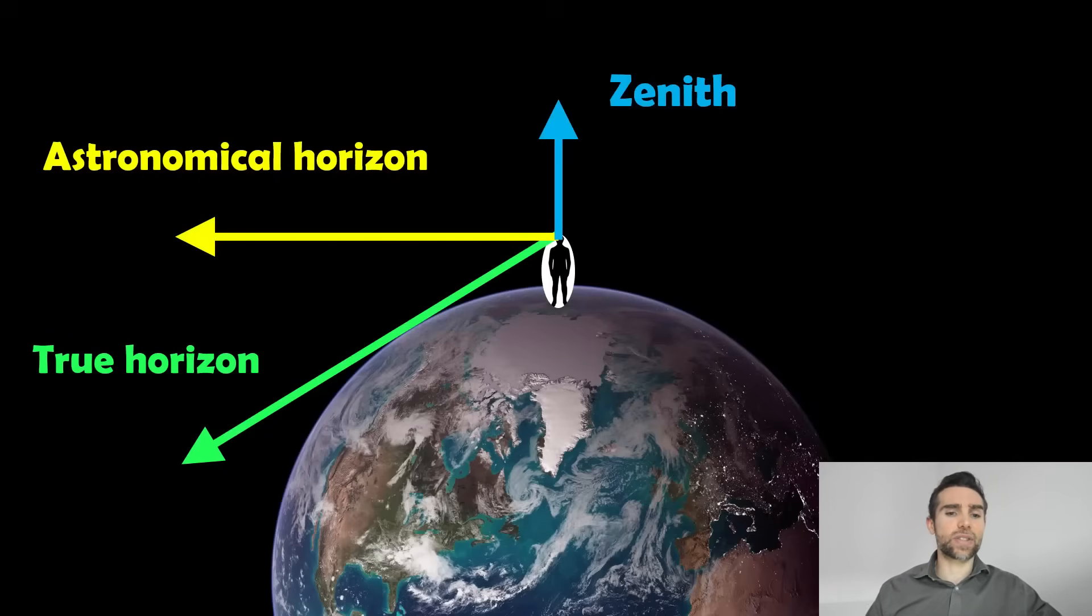If we're standing on the surface of the Earth, and to be honest I've put the Earth here but no one's really going to be standing where that person's standing. But if you're standing on the Earth like that, if you look directly above you, at an altitude of 90 degrees, that's the zenith. So directly above you is the zenith.